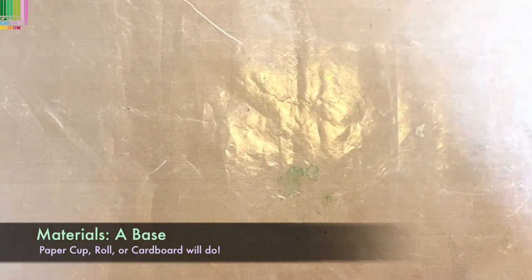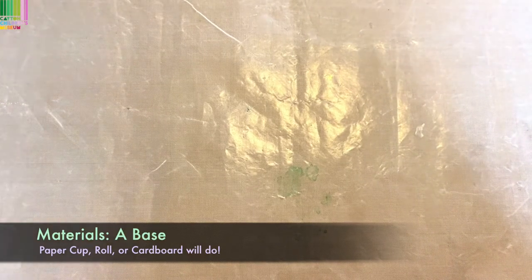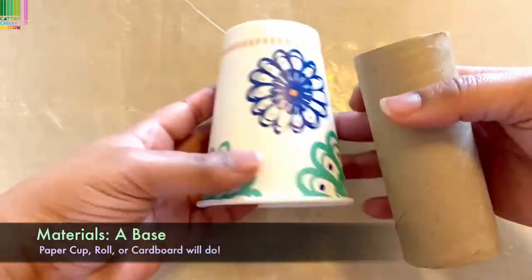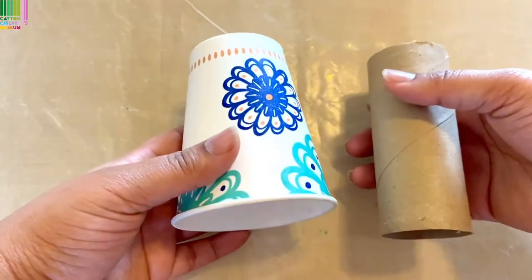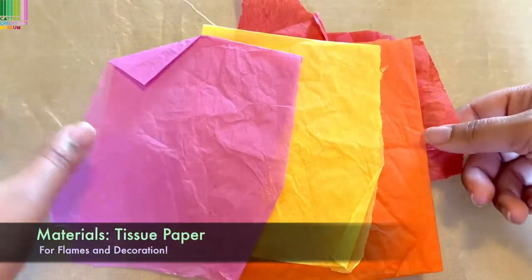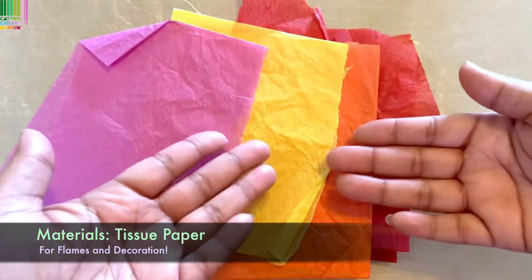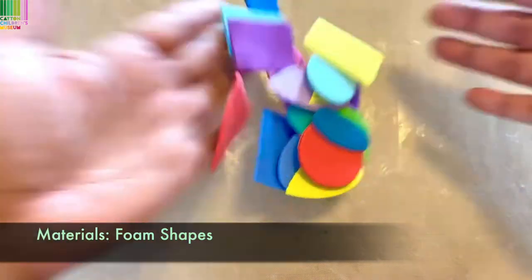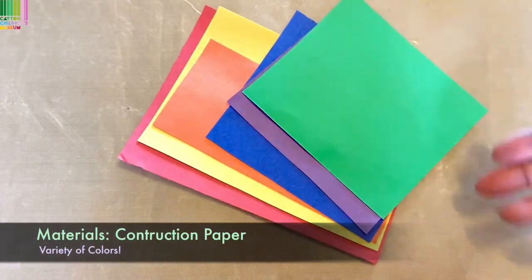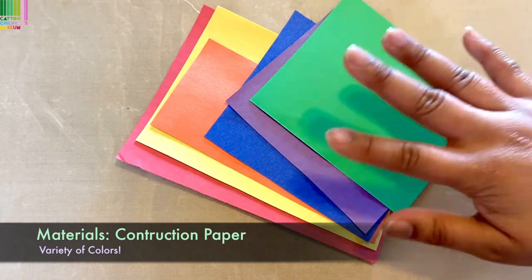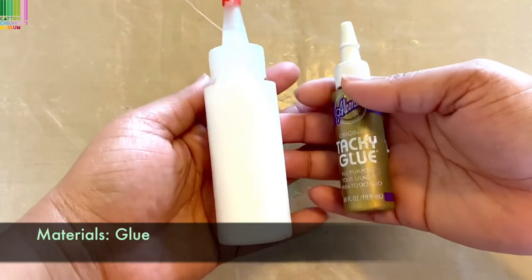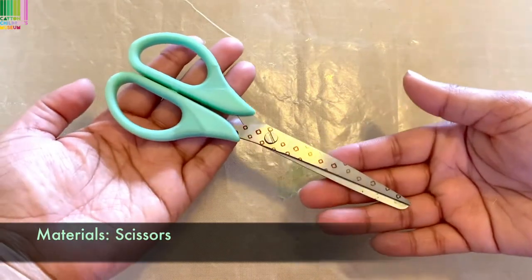What you'll need for this project is something to use as your base. I have a toilet paper roll and a cup here, some tissue paper in a variety of warm tone colors, some foam shapes, construction paper in a variety of colors, and I'm using some scratch paper leftover from a previous project. Whatever glue you may have on hand, and scissors with the help of a grown-up.